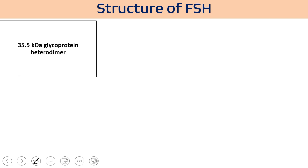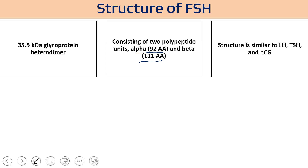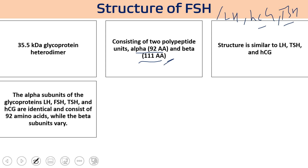FSH is a 35.5 kilodalton glycoprotein which is a heterodimer — having two different polypeptide chains, an alpha chain and a beta chain. The alpha chain consists of 92 amino acids and the beta chain consists of 111 amino acids. FSH, LH, HCG, and TSH all have the same alpha chain of 92 amino acids; they differ only in their beta chain, which accounts for their different functions.